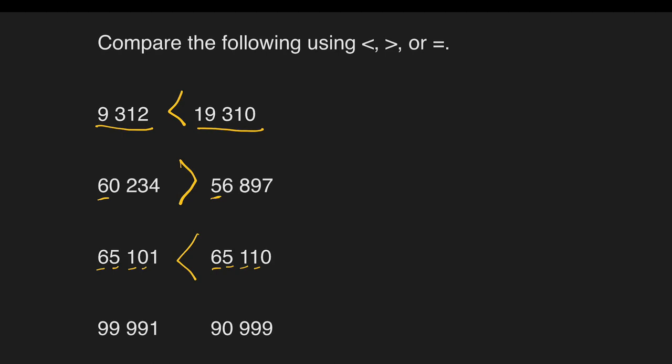For the last set, let's compare starting from the left. That's 9, 9, 9, 0. So 9 is bigger. It means our answer is greater than. 99,991 is greater than 90,999. There we go. That's so easy.